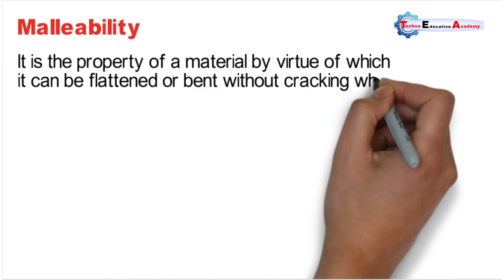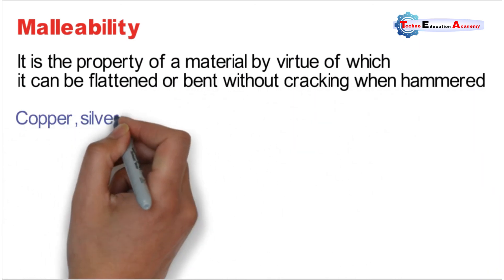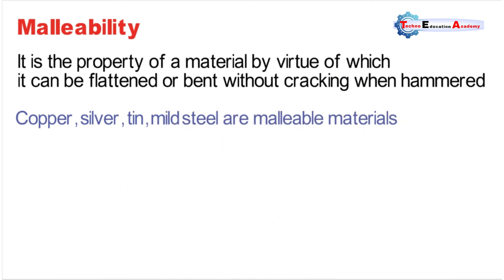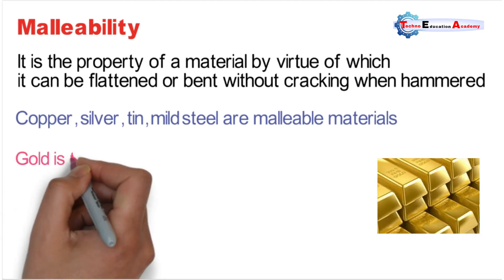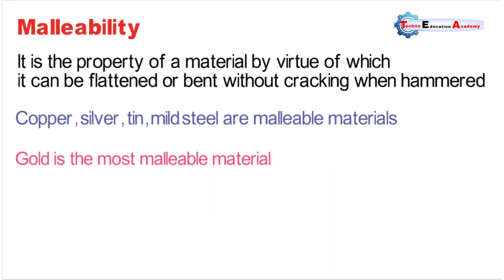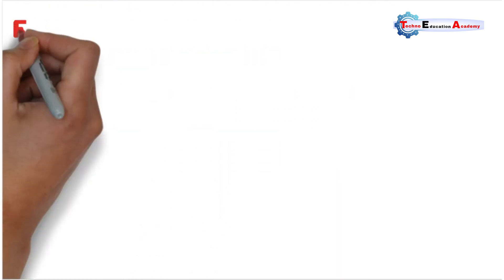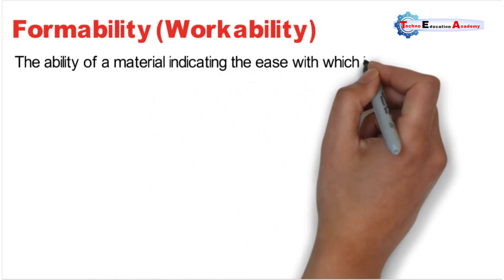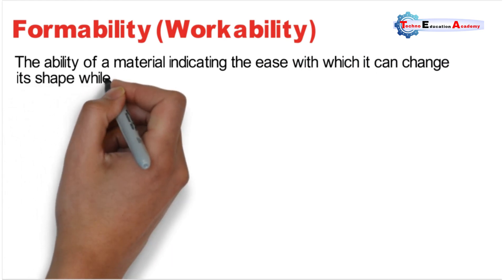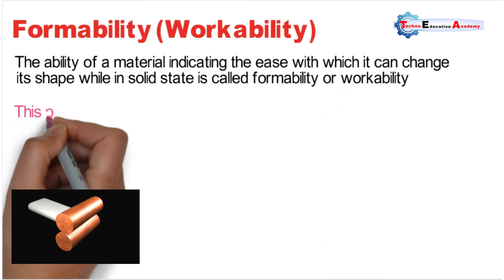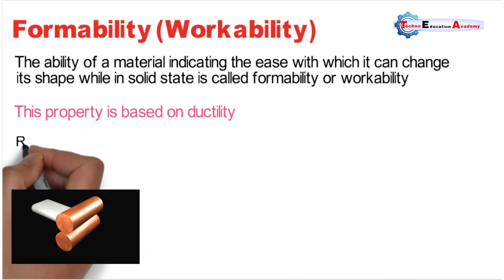The next property is malleability. Malleability is the property of a material by virtue of which it can be flattened or bent without cracking when hammered. Examples of malleable materials are copper, silver, tin, and mild steel. Gold is the most malleable material — this question is generally asked in most competitive exams. The next property is formability or workability — the ability of a metal indicating the ease with which it can change its shape while in solid state. This property is based on ductility; rolling, extrusion, and deep drawing are various forming operations.